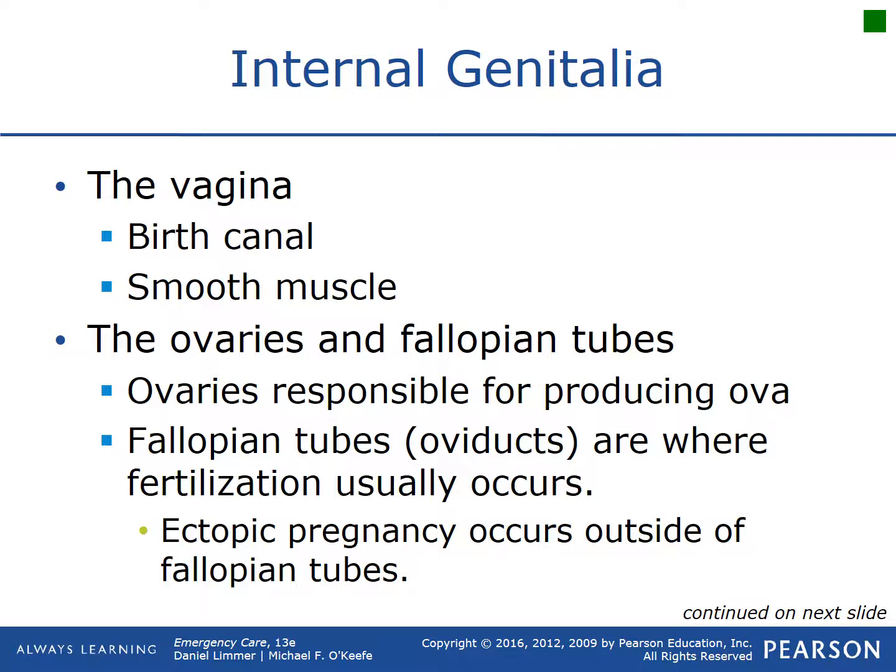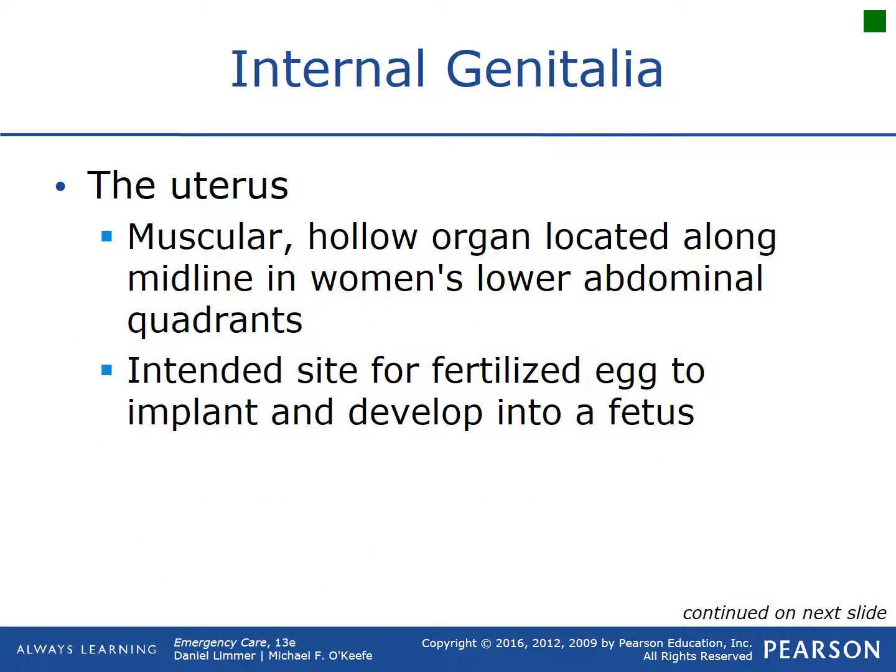The vagina is part of the birth canal — that is its intended function. The ovaries are responsible for producing the ova, while the fallopian tubes are where fertilization occurs — where the sperm reaches and fertilizes the egg. Ectopic pregnancies occur outside of the fallopian tubes, where that ovum gets fertilized somewhere it's not supposed to.